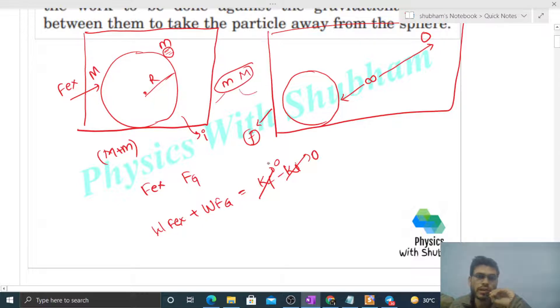Now we can see that gravitational force of attraction is a conservative force, and work done by a conservative force is minus of change in respective potential energy. So work done by gravitational force of attraction will be minus of change in gravitational potential energy of the system. So from this equation, work done by external force will be simply change in potential energy of the system.